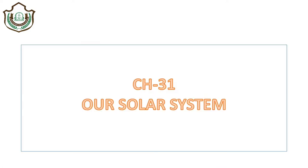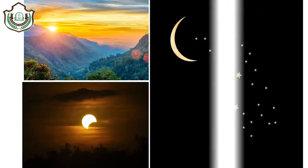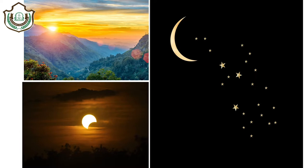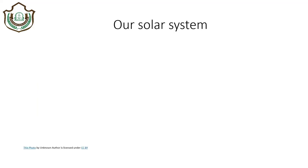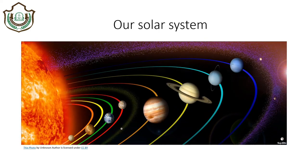Now, the time for our solar system, which is chapter number 31. Our solar system consists of planets, moon, stars and many more interesting things. We live on the planet Earth, which is the only planet that has life in our solar system. Do you know the name of our galaxy? We live in the Milky Way Galaxy. Our solar system has eight planets and a star, the sun, that gives us heat and light.